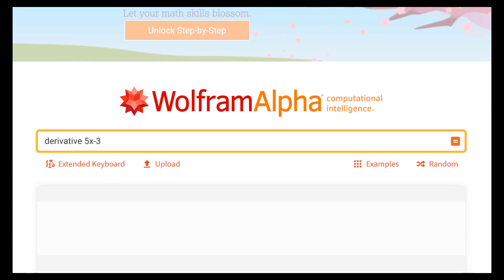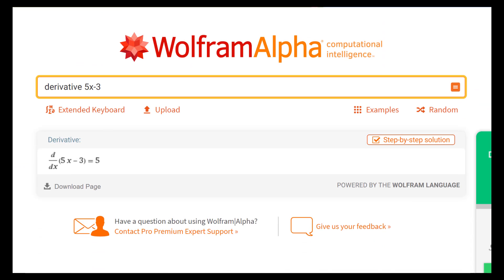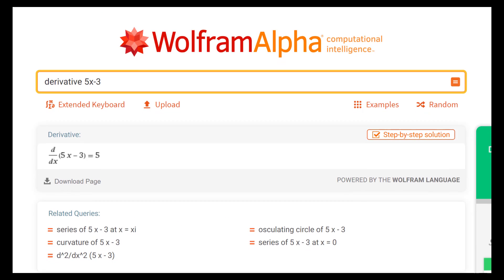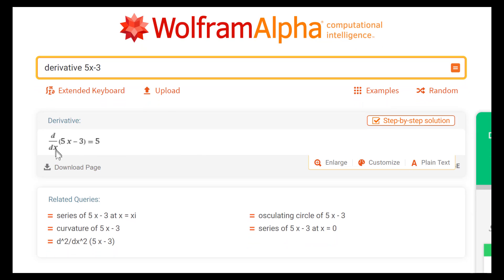There we go, it gives Leibniz notation d/dx, that means the derivative of 5x - 3 equals 5. So that's how you would do it on Wolfram Alpha.